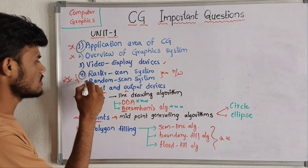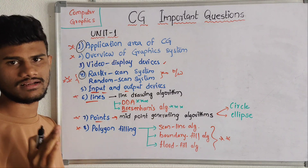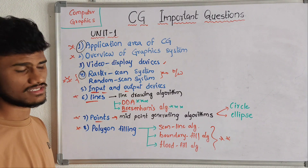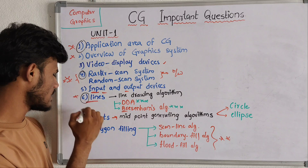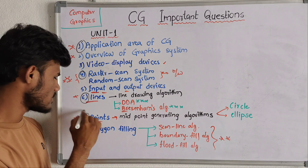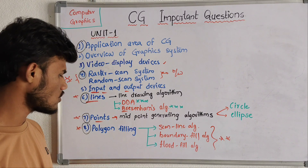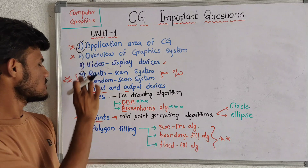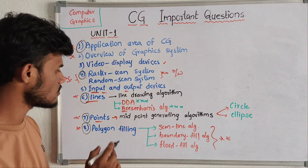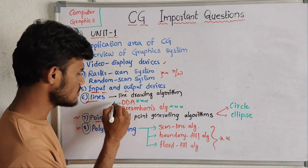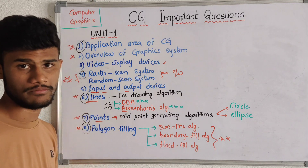So the key topics are: raster scan and random scan systems, lines, points, and polygon filling. These five topics are very very important questions, with lines and points being the most critical. If you read up to here under this chapter, we have three parts.